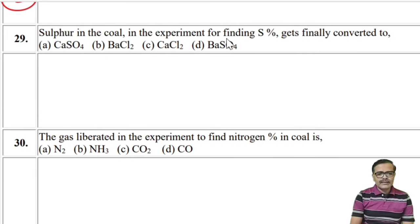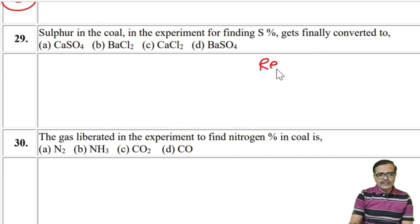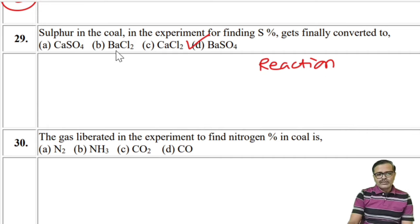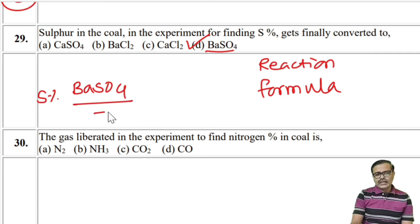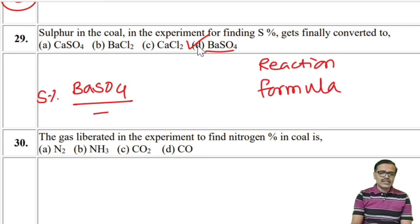In the experiment for finding sulfur percentage in coal, sulfur gets finally converted to barium sulfate as a precipitate. Do not confuse barium chloride with barium sulfate. The formula confirms: sulfur percentage = weight of barium sulfate formed / initial weight × factor. So the answer is D: barium sulfate.